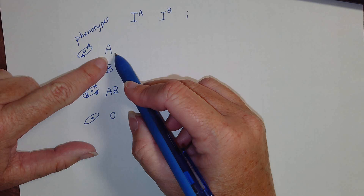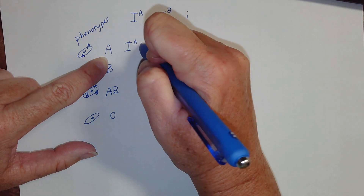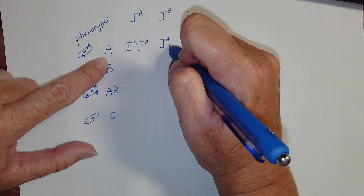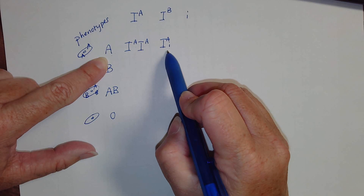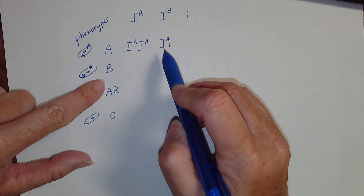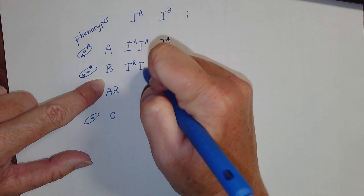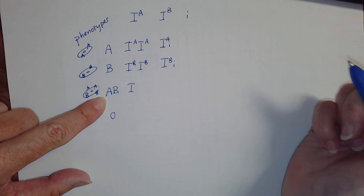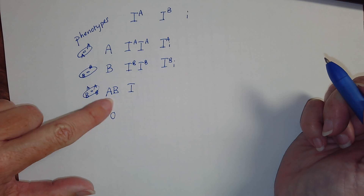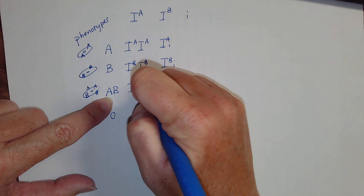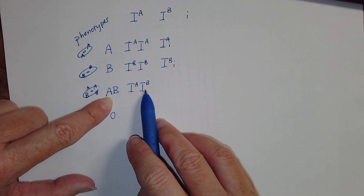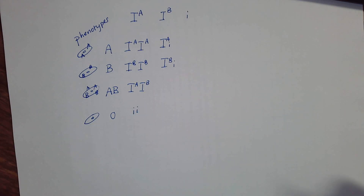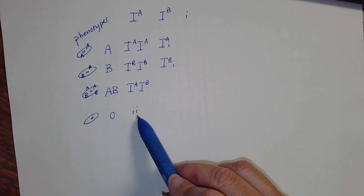An individual who is Type A could be homozygous — meaning they have two A alleles — or heterozygous, meaning they carry the O allele and can pass it to offspring. Type B has the same arrangement: homozygous BB or heterozygous BO. If you are Type AB, you are expressing both alleles co-dominantly, so the only genotype is one A allele and one B allele. Type O is recessive: little i little i — two O alleles.